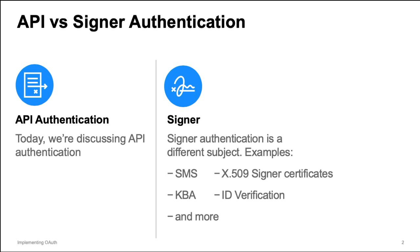Signer authentication is also important for DocuSign applications. Signer authentication assures the sender that the signer or signers of your documents are who they say they are. DocuSign offers many types of built-in signer authentication that you can request for your envelopes, either via the DocuSign web tool or via API requests. Signer authentication options include the list shown on the screen and more.